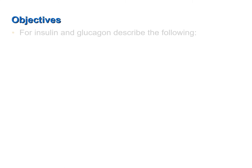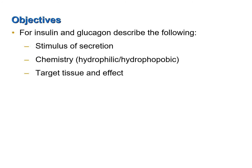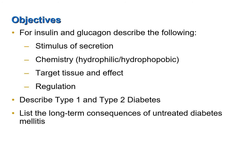This screencast was designed to achieve the following objectives. For insulin and glucagon, describe the stimulus of secretion, chemistry, target tissue and effect, and how the hormones are regulated. Also, describe type 1 and type 2 diabetes, and list the long-term consequences of untreated diabetes mellitus.